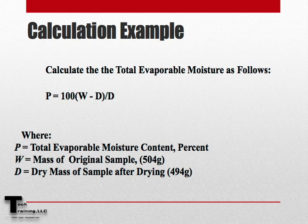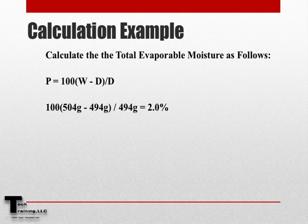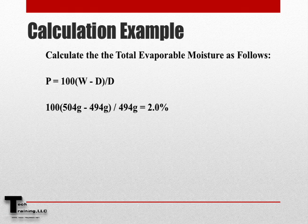As an example, let's assume that the mass of the original sample was 504 grams and the mass of the sample after drying was 494 grams. Here we would take 100 and multiply it by the difference between the original mass and the mass after drying, which in this case would be 10. Therefore, we would have 1000 divided by 494 grams, which would equal 2% total evaporable moisture.